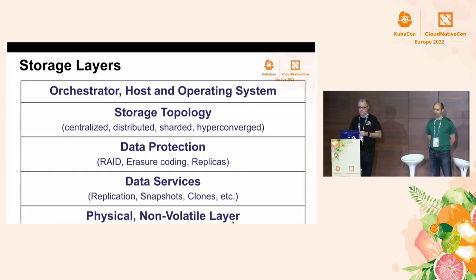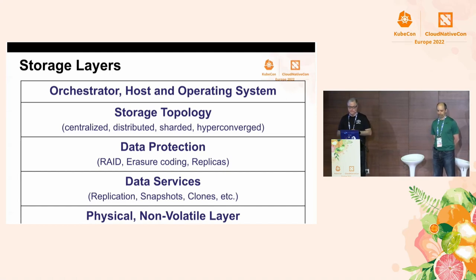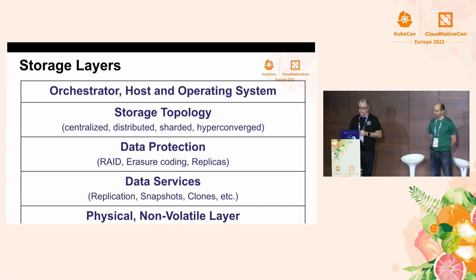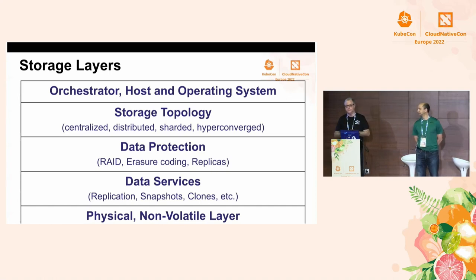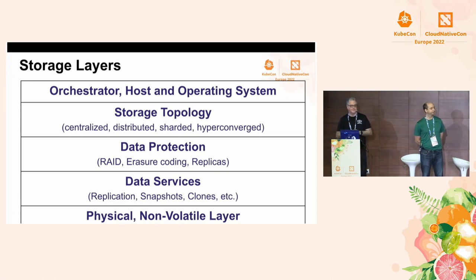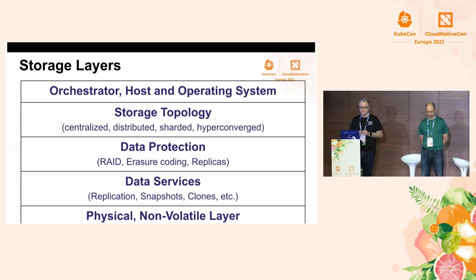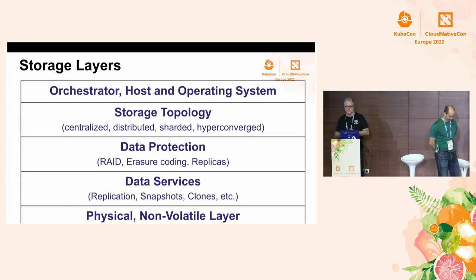There are several storage layers that can impact storage attributes. For example, a hypervisor can provide access to resources rather than direct access, which could add overhead. Storage topology describes the arrangement of storage compute resources and the data link between them — this includes centralized, distributed, sharded, and hyper-converged topologies. Storage systems usually have data protection layers which add redundancy, referring to RAID, erasure coding, and replicas. Storage systems also usually provide data services in addition to core storage functions, including replication, snapshots, clones, and so on.